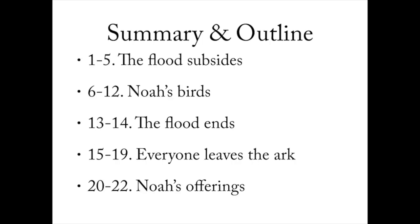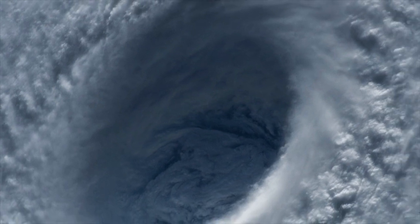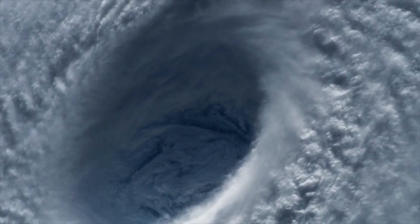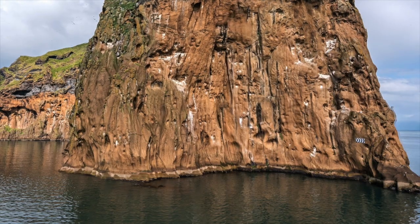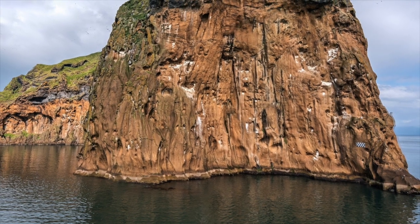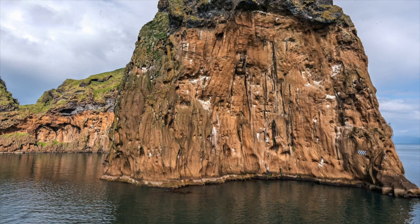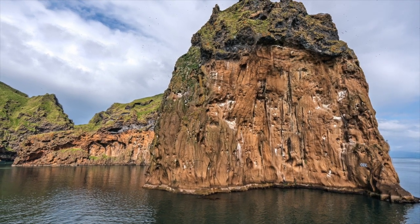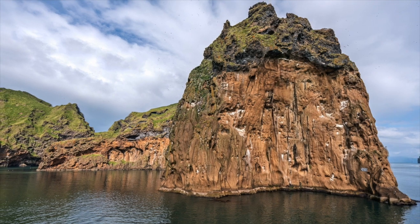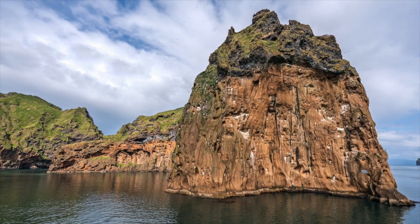I divided the chapter into five sections. In verses 1 to 5, what I call the flood subsides, Yahweh remembers Noah and decides to end the flood. He sends a wind to stop the waters from on high and below, and after another 150 days, the waters stopped gushing. Noah's ark rests on the mountains of Ararat, and then finally the mountaintops appear. We are told that these mountaintops appear in the 10th month, and the flood began in the second month of that year.